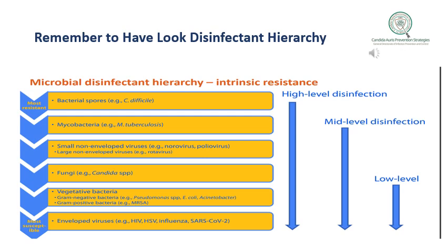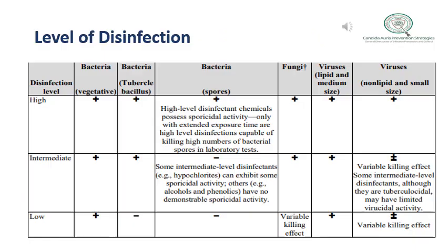Each microorganism has a specific disinfection requirement. From this graph, you can see the disinfectant hierarchy. We have three levels of disinfection: high-level disinfection, which has efficacy over microorganisms plus spores; mid-level disinfection, which covers all microorganisms except spores; and low-level disinfection, which covers only some microorganisms.